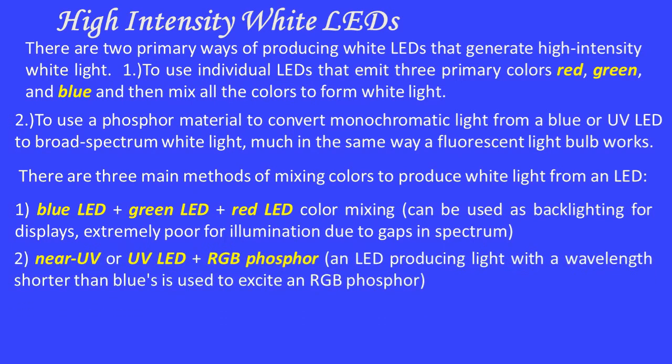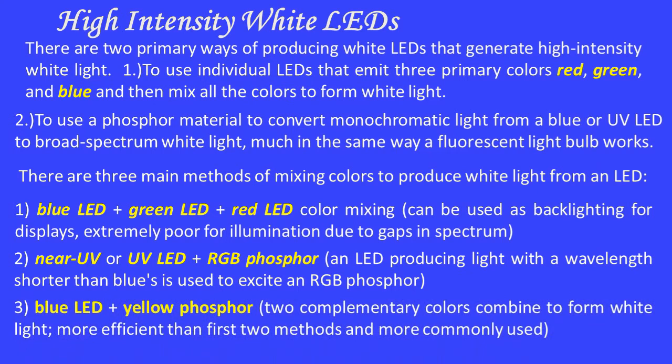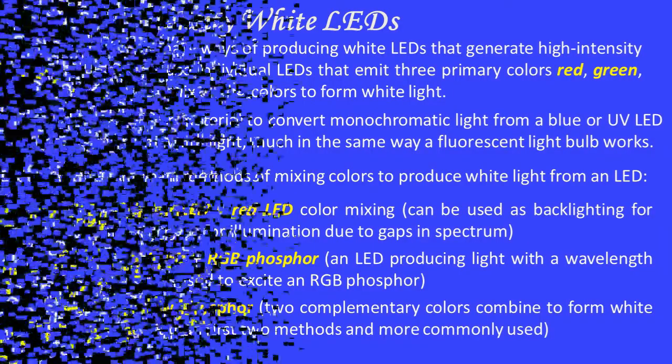The second method is near-ultraviolet or ultraviolet LED plus RGB phosphor — an LED producing light with a wavelength shorter than blue is used to excite an RGB phosphor. The third method is blue LED plus yellow phosphor, where two complementary colors combine to form white light. This is more efficient than the first two methods and is more commonly used.